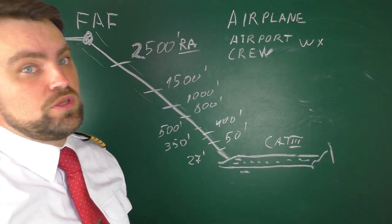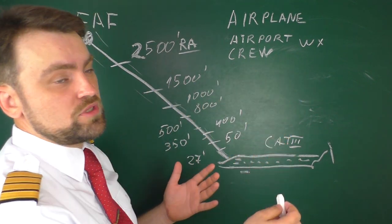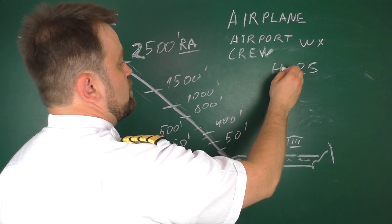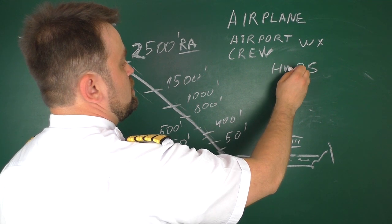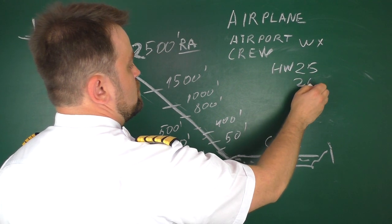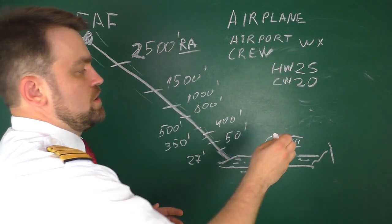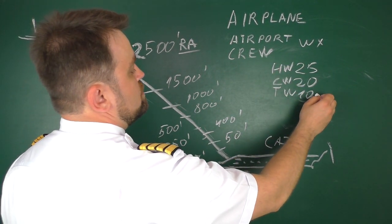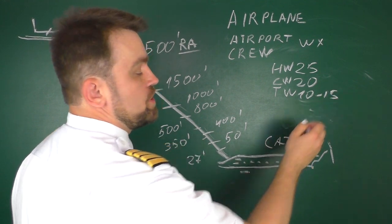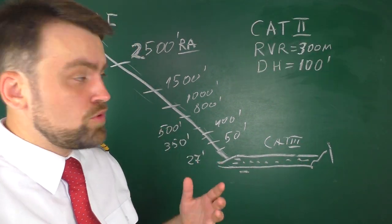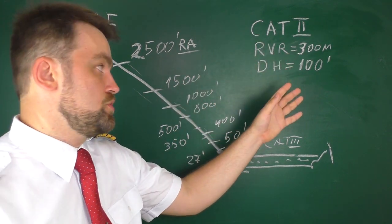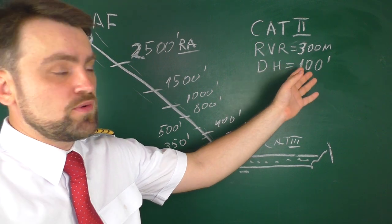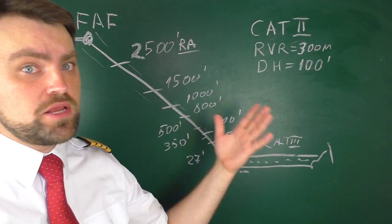The weather at the airport must also fit your requirements. For automatic approach and landing, there are wind limitations. For the Boeing 737, it is 25 knots of headwind, 20 knots of crosswind, and around 10 to 15 knots of tailwind depending on airplane modifications. What about the Category 2 approach, with RVR not lower than 300 meters and a decision height of 100 feet? Well, actually you can land manually.